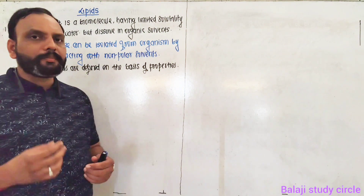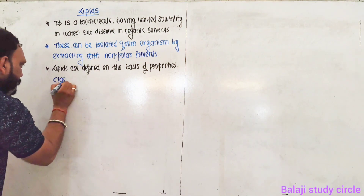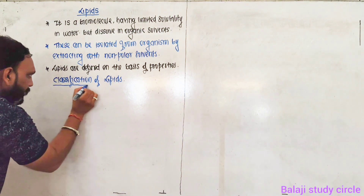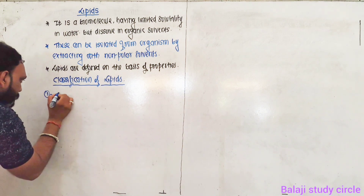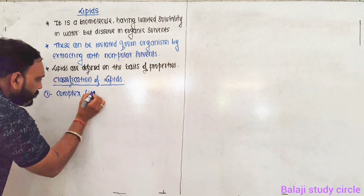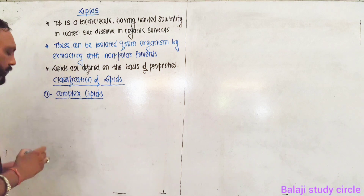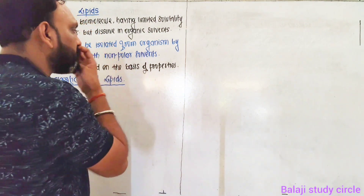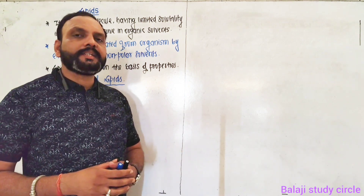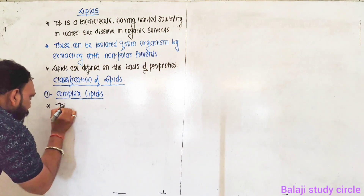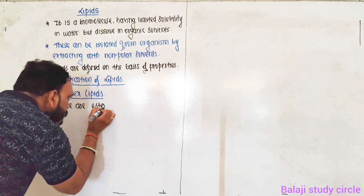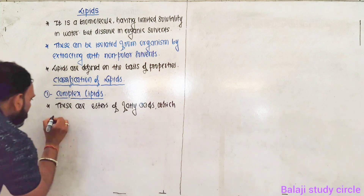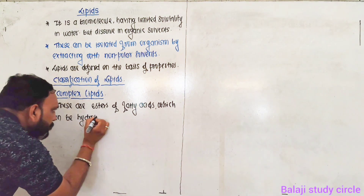Lipids are classified into two types. Let's discuss the classification of lipids. The first variety is complex lipids. Complex lipids are the esters of fatty acids, and they can be hydrolyzed.